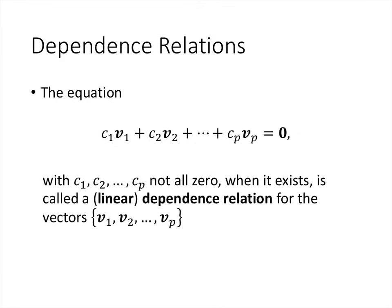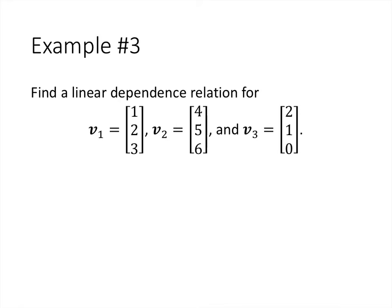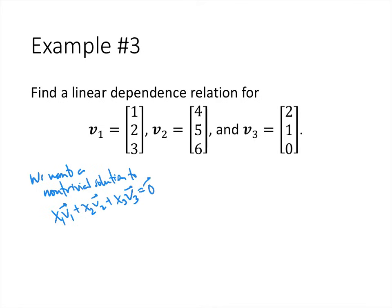If there's some way to plug in numbers for the x's that are not all 0 to make the left-hand side equal the right-hand side, that way of doing it is called a dependence relation. And in general, for a set of vectors that are linearly dependent, there are lots of ways to do that. Let's do an example. We have three vectors, and I'm telling you they are linearly dependent. We want to find a linear dependence relation — a non-trivial solution to x1v1 plus x2v2 plus x3v3 equals the 0 vector.